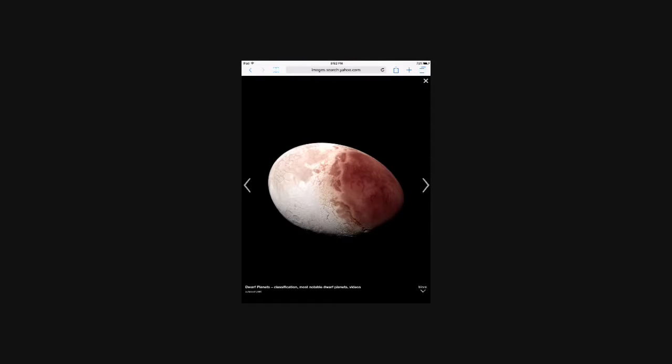Haumea is a dwarf planet in the shape of a football. A day lasts only four hours there.